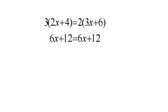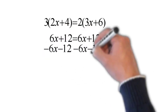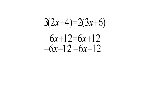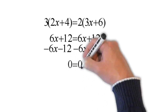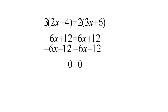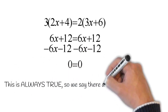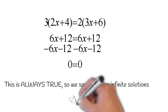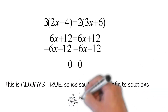We can stop any time we notice it's the same on both sides of the equal sign. To simplify further, we take away 6x from both sides and take away 12 from both sides. That gives us 0 on the left, which equals 0 on the right — which is always true. So we say there are infinite solutions.